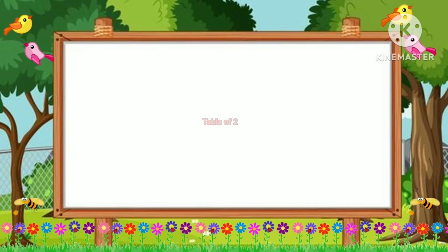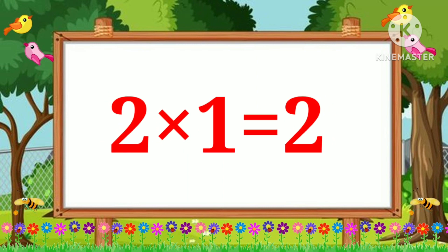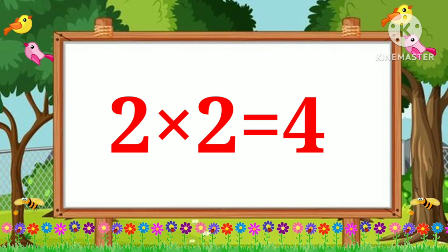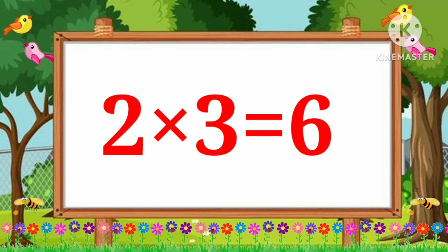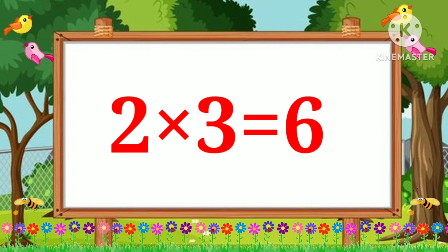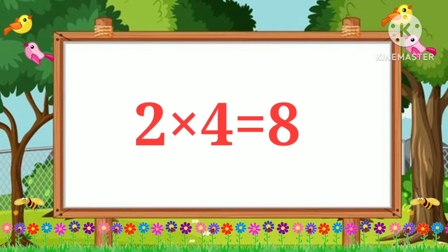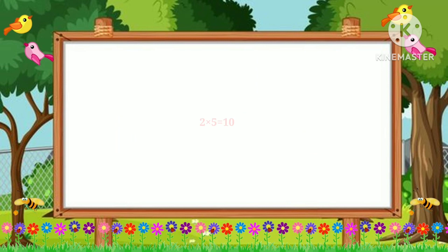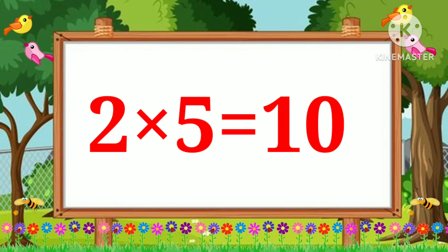Two ones are two. Two two's are four. Two three's are six. Two four's are eight. Two five's are ten.